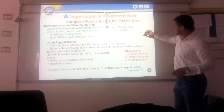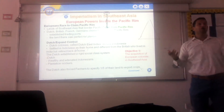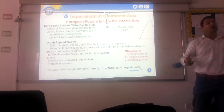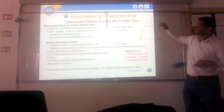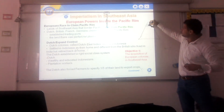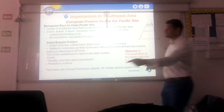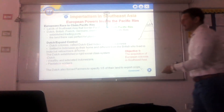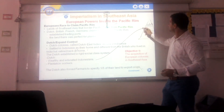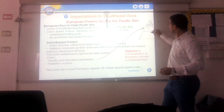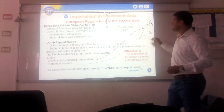The Dutch established a rigid social class system — a caste system. Europeans, the Dutch — the white race, per Social Darwinism — came on top. Next were the wealthy and educated Indonesians. Third were the plantation workers or peasants.